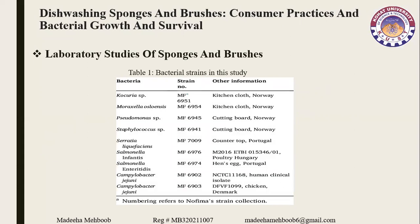The bacterial strains used in this study are listed in the figure below. The bacterial species include Kocuria species, Moraxella osloensis, Pseudomonas species, Staphylococcus species, Serratia liquefaciens, Salmonella species, and Campylobacter species. Representatives of the dominant bacterial genera among the isolates were selected for further study.